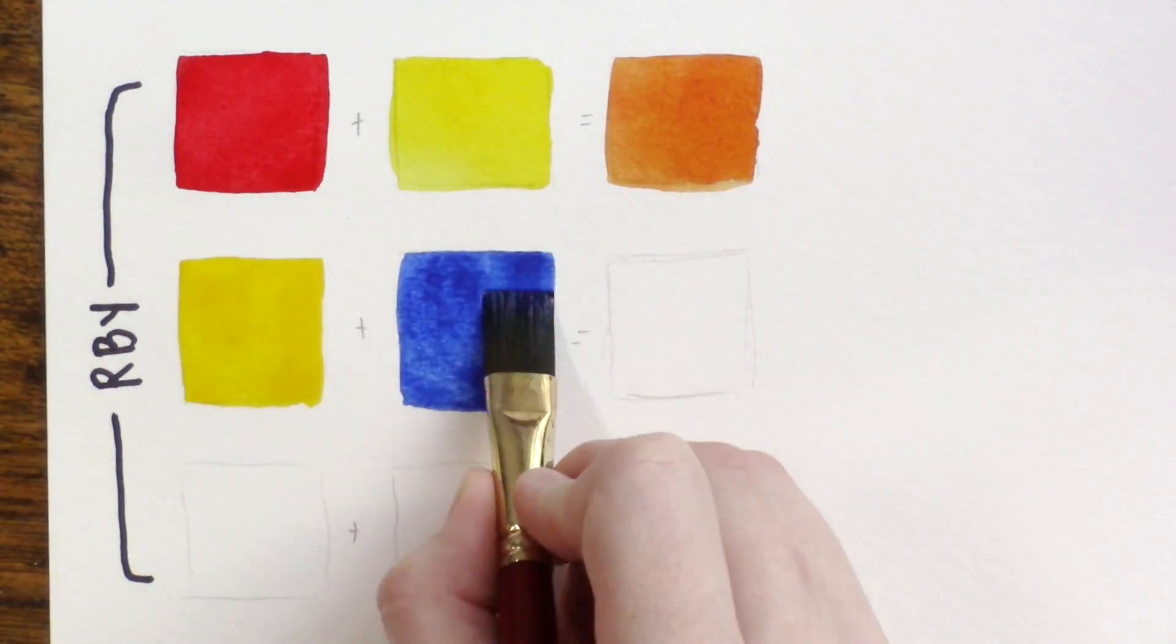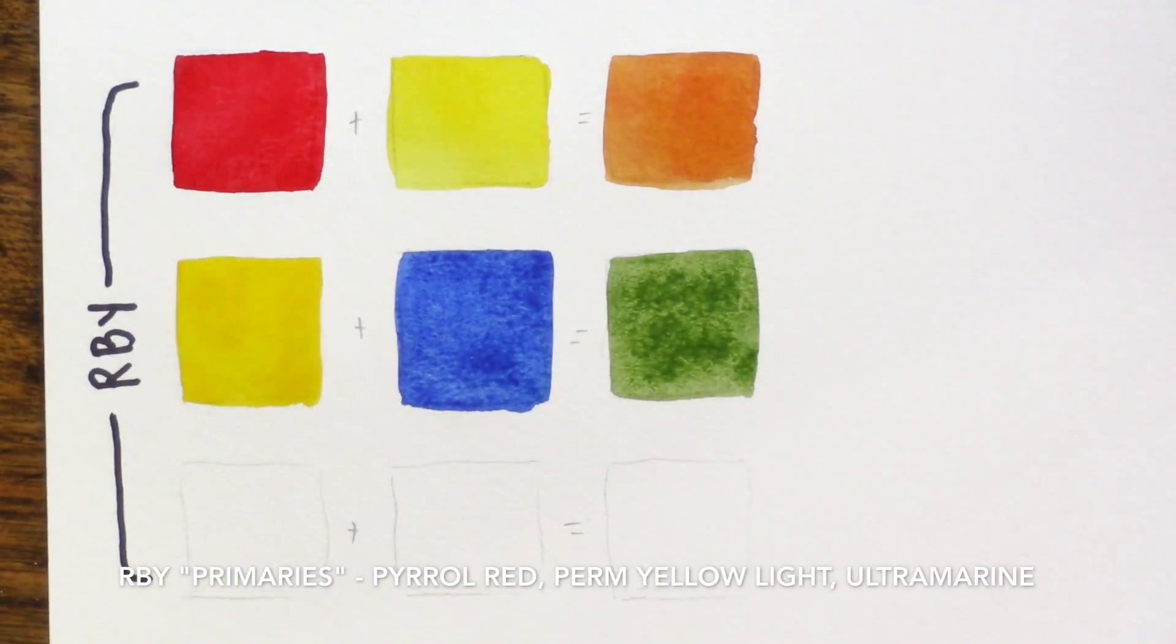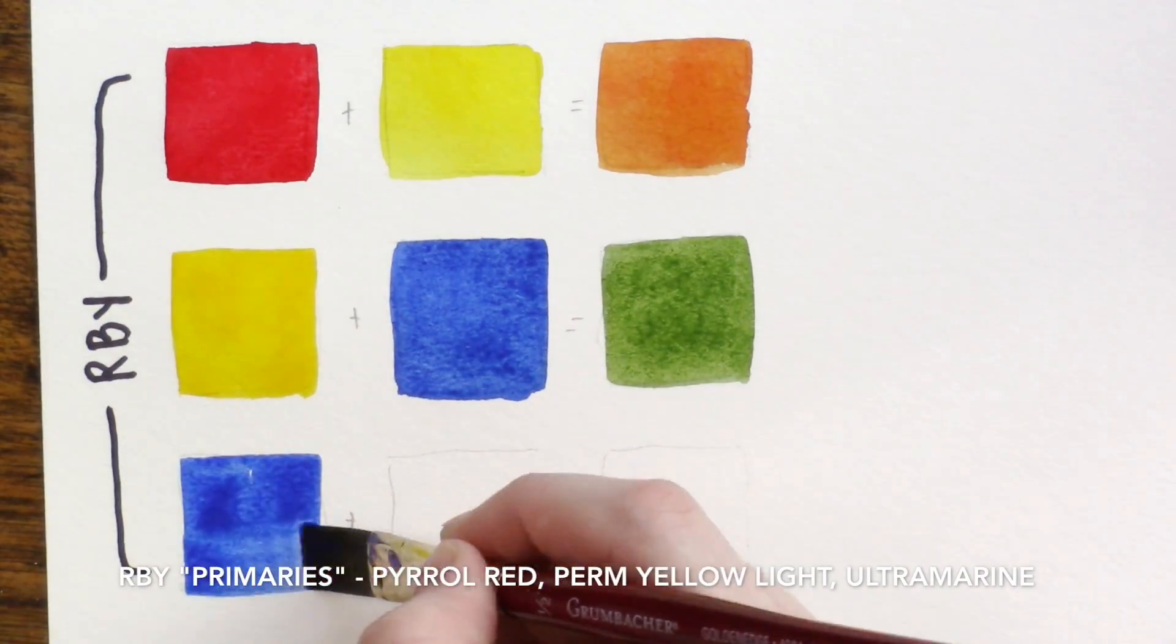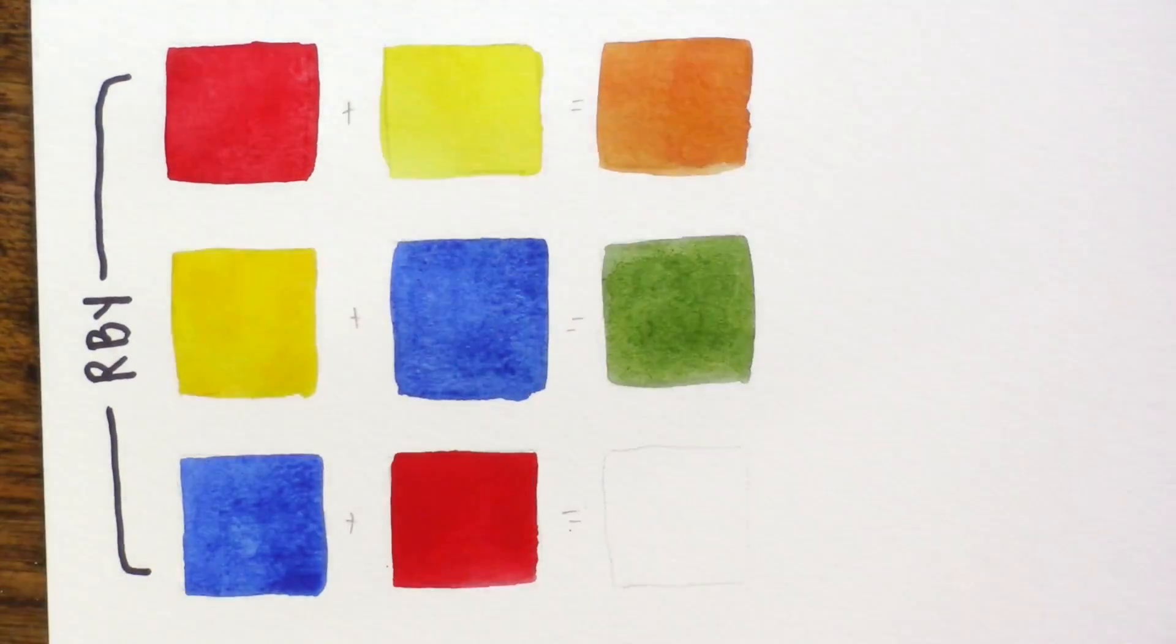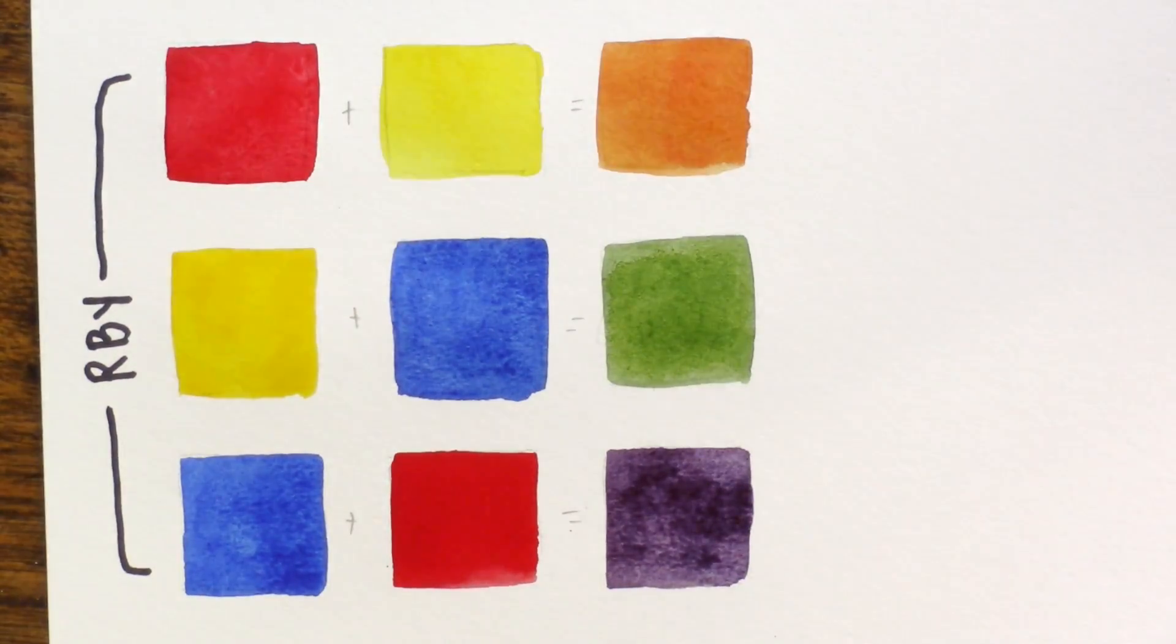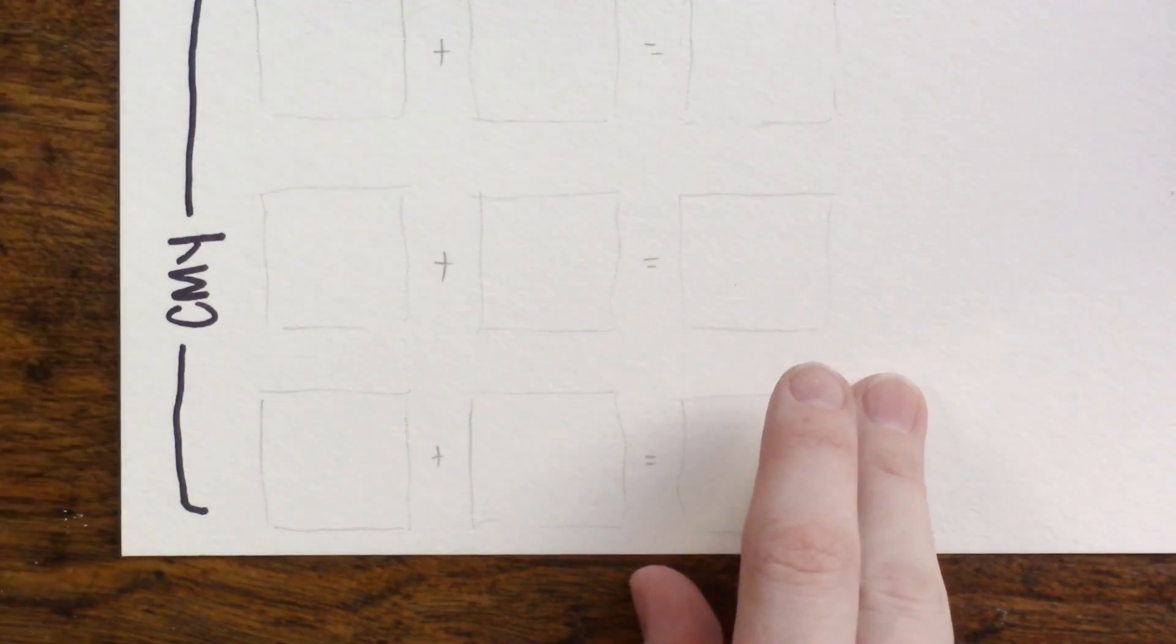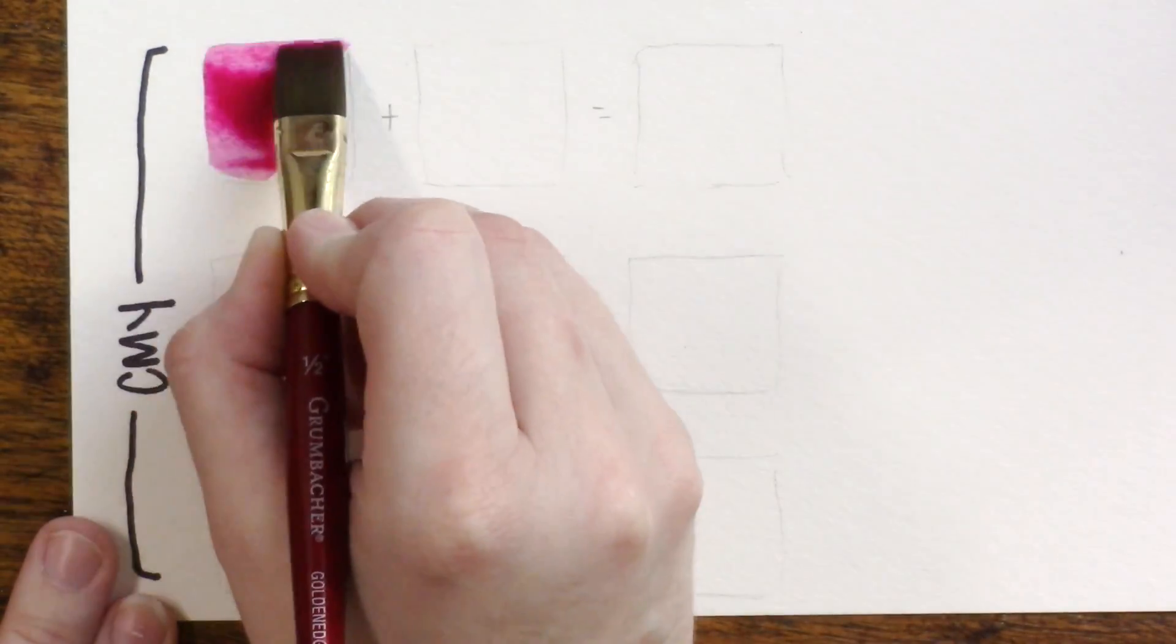For this first section when we're mixing red, blue, and yellow, the colors I'm using are Pyrrole Red by Daniel Smith, Permanent Yellow Light by Mission Gold (although any middle of the road yellow would be fine), and French Ultramarine also by Daniel Smith.